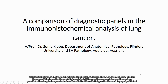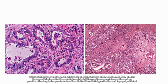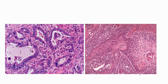Hello, my name is Sonja Klebe and I present to you a comparison of diagnostic panels in the immunohistochemical analysis of lung cancer. Lung cancer remains a leading cause of death despite advances in treatment, which largely rely on molecular techniques that identify targets for therapy such as EGFR. This depends on accurate histological subtyping of the lung cancer so they can be selected for further molecular testing.